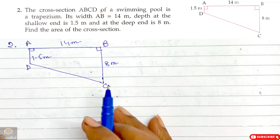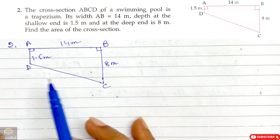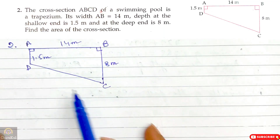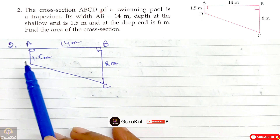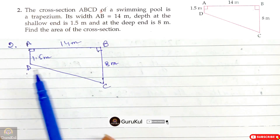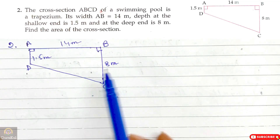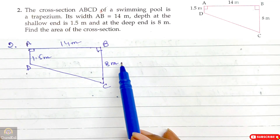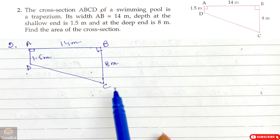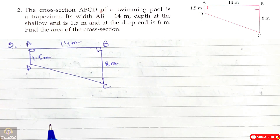Now question number 2. The cross section A, B, C, D of a swimming pool is a trapezium. Its width A, B is 14 meter. The depth at the shallow end is 1.5 meter, and at the deep end it is 8 meter. We need to find the area of this cross section.